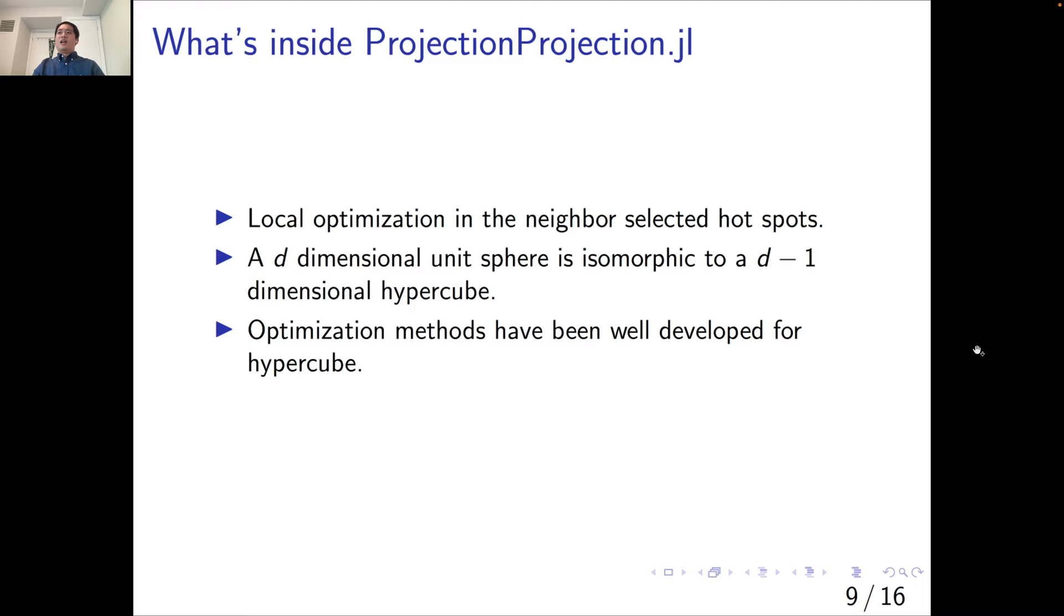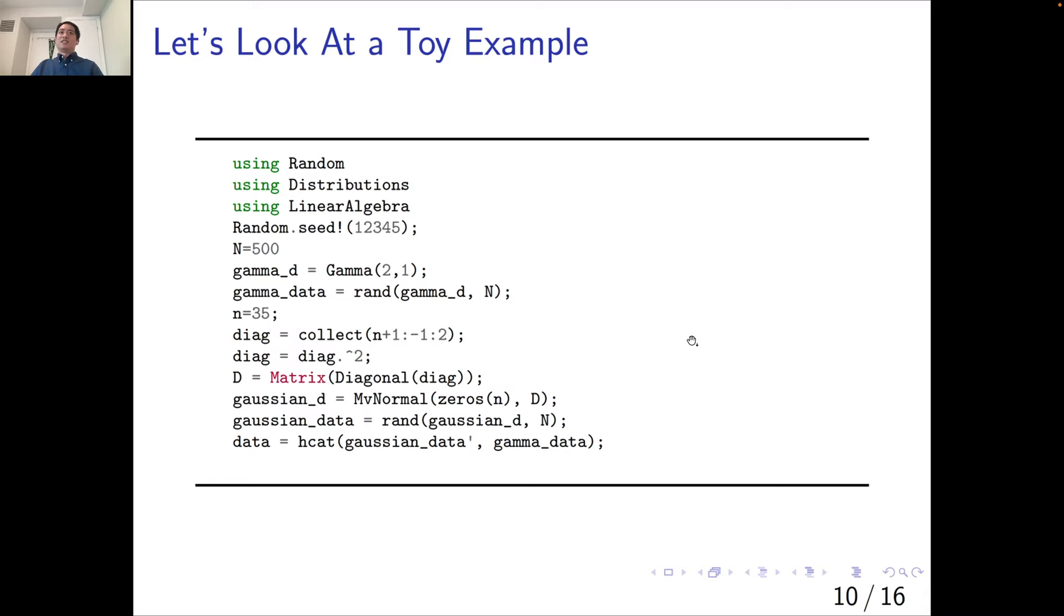With the estimation of the surface, we can now select a few hotspots that are likely to be close to the final solution. We can conduct a local optimization in the neighbors of each selected hotspot. The key here is to notice that a d-dimensional unit sphere is isomorphic to a d-1 dimensional hypercube. So we just map the neighbor to a hypercube, and the corresponding optimization method for hypercubes has been well developed. We just need to map back the results to the unit sphere.